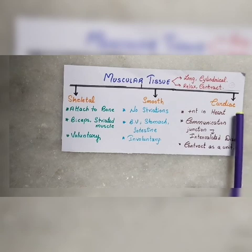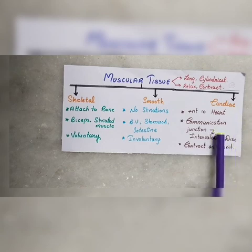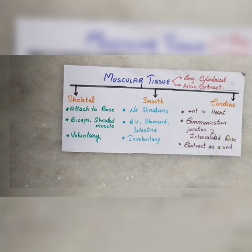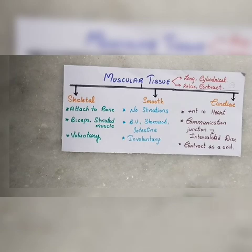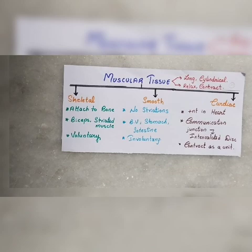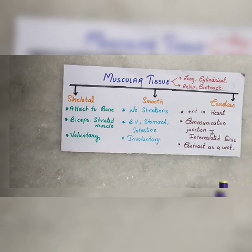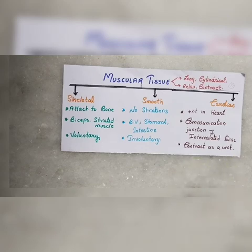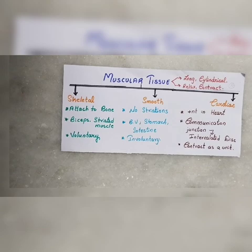Cardiac muscle is found in the heart. The heart has communication junctions called intercalated discs, and it has four chambers — atria and ventricles — that are interconnected. The chambers contract and relax automatically. This function is done involuntarily. Cardiac muscle contracts as a single unit due to the intercalated discs.